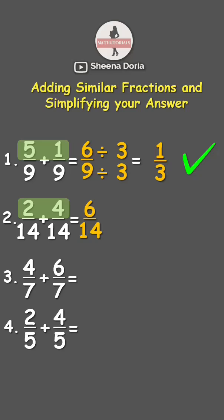we can still divide both 6 and 14 by 2. 6 divided by 2 is 3, while 14 divided by 2 is 7. Answer: 3/7.